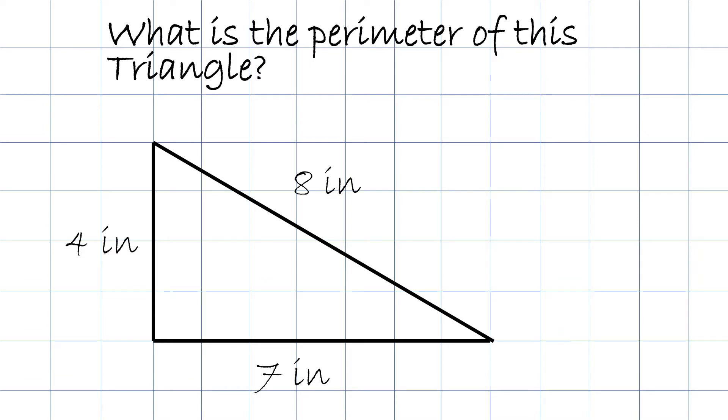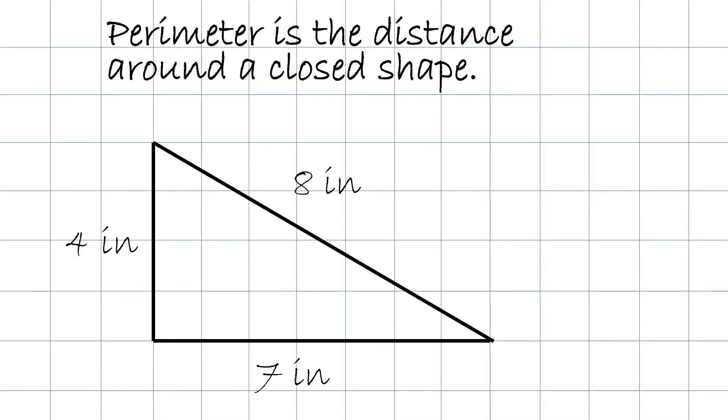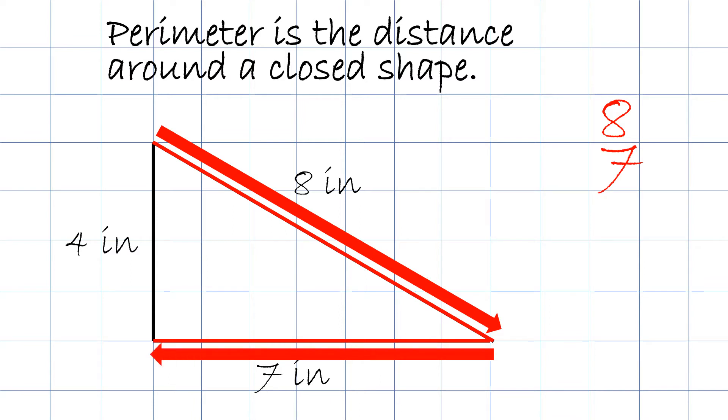What is the perimeter of this triangle? We know the perimeter is the distance around a closed shape. So we will start with 8 inches plus 7 inches plus 4 inches. And the answer is 19 inches.